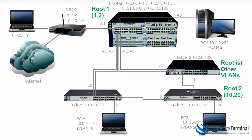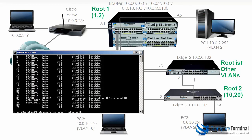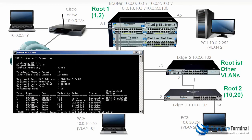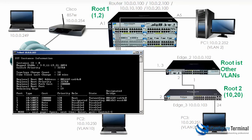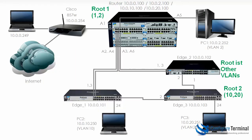To recap on edge 3: looking at instance 1, port 2 is blocking. Looking at instance 2, port 2 is forwarding. Looking at the IST, the port is also forwarding. So the state of port 2 on this switch varies depending on which instance we're looking at, because we have chosen different switches to be the root for different instances.